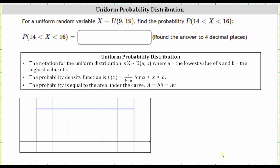We are given the random variable X has a uniform distribution with a minimum of nine and a maximum of 19. We're asked to find the probability that X is greater than 14 and less than 16.